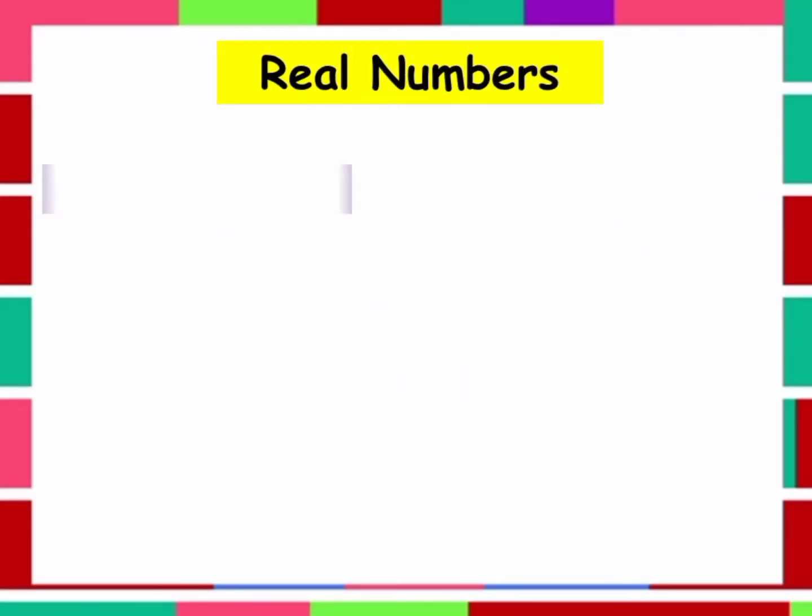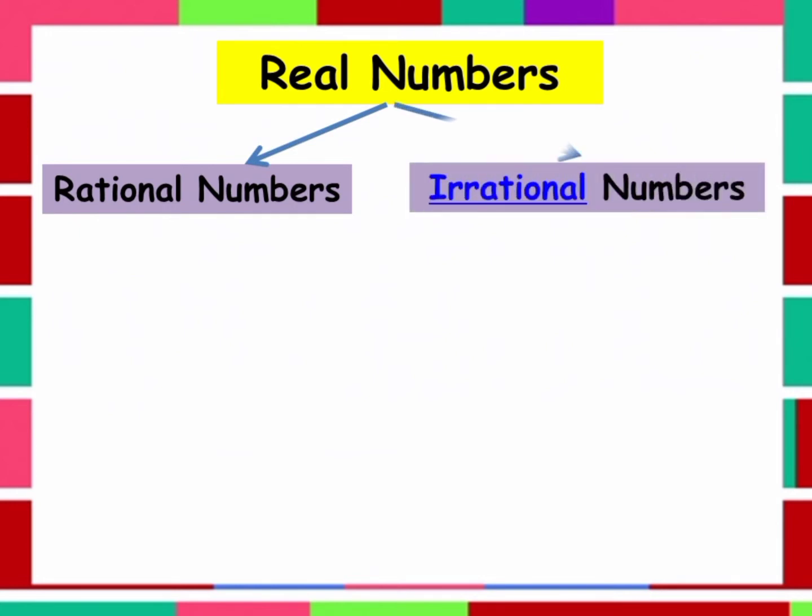So what are the subsets of real numbers? First is the rational numbers and the second one is the irrational numbers. So what is rational numbers?